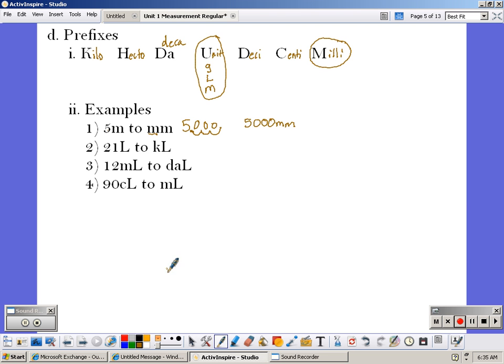In number two, I have twenty-one liters. Again, that's one letter, so I know that it's a unit. I'm trying to convert it to kiloliters. So that's one letter, two letters, three letters to the left. So I'm going to move my decimal one, two, three spaces to the left. So that would be 0.021 kiloliters.